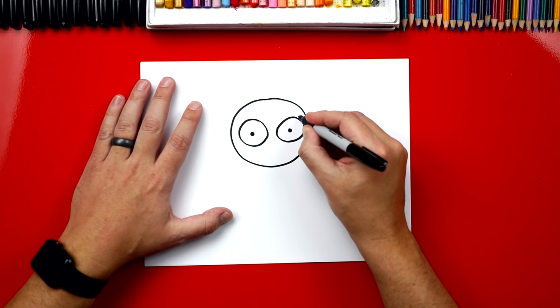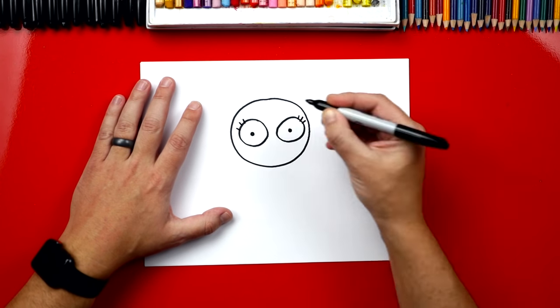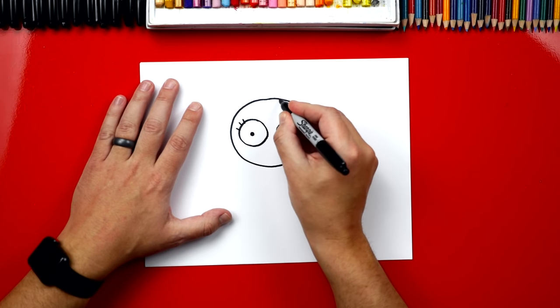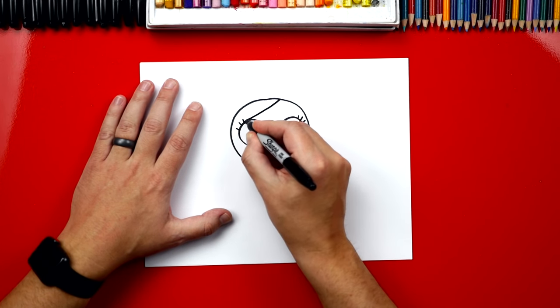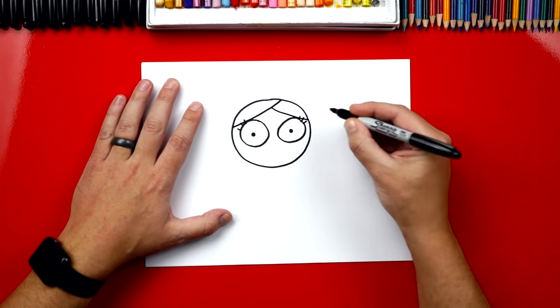Now let's draw three eyelashes on each eye. Then we can draw her hair. I'm gonna draw a big curve over here that comes down to the side, and then we're gonna draw another one that comes down to the other side.